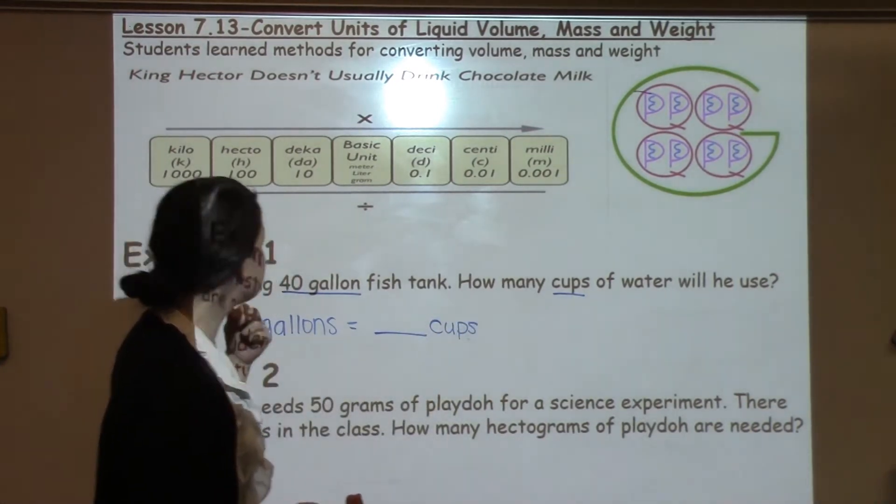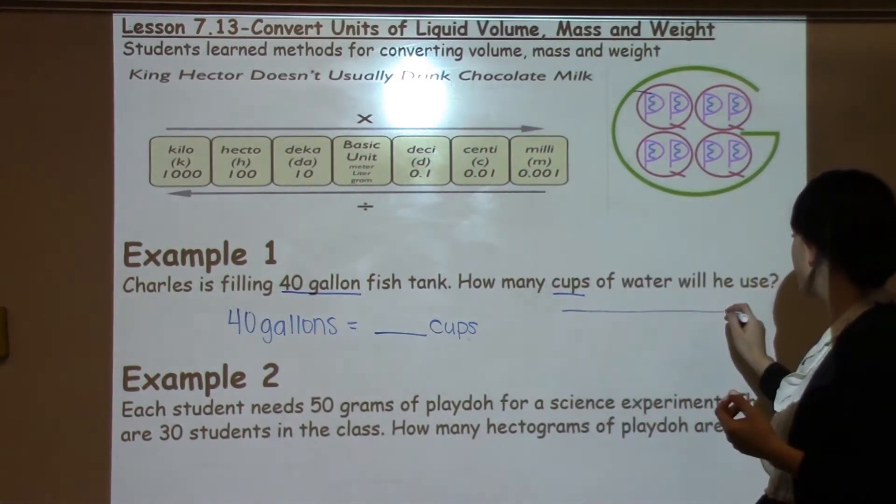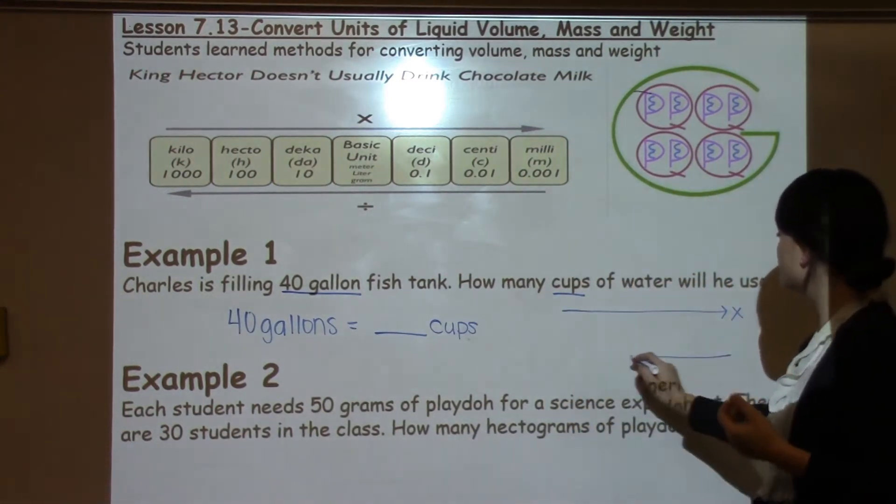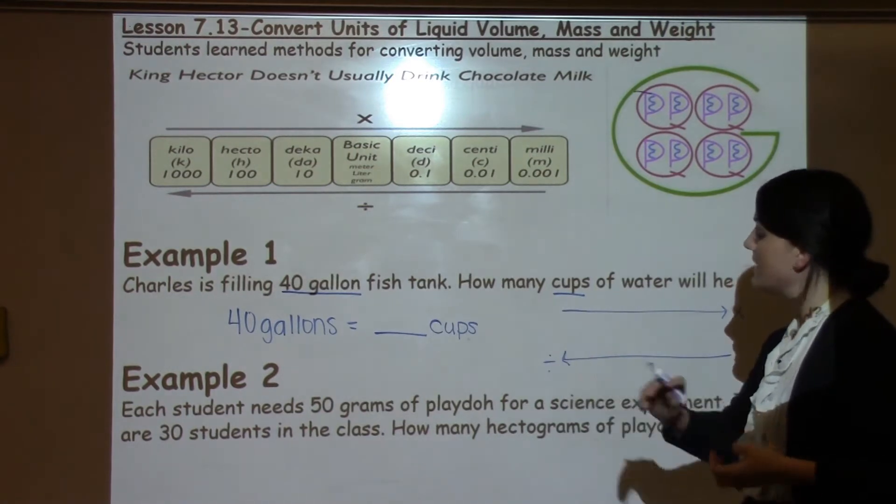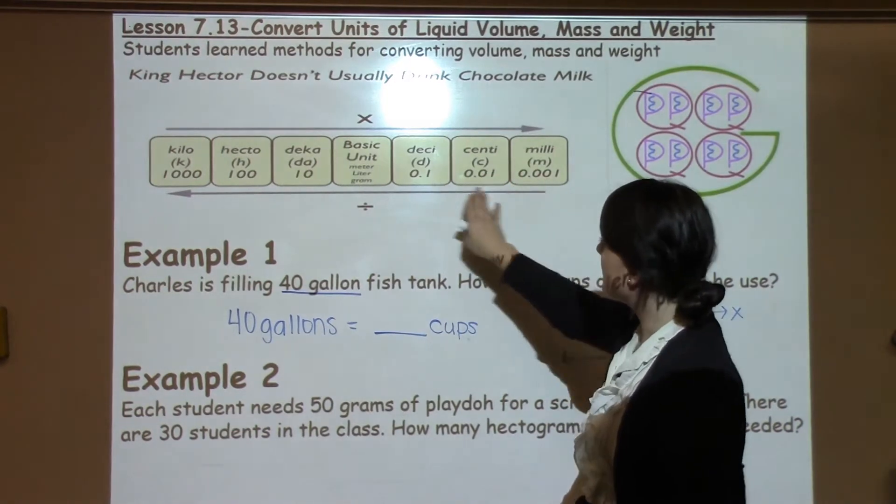As we referenced in lesson 7.12, a really nice handy way for students to remember whether they need to multiply or divide is to take whatever unit of measure they're in. With metric it's already done for them, but if they're working here with the customary system, all they need to do is to put the largest unit first.